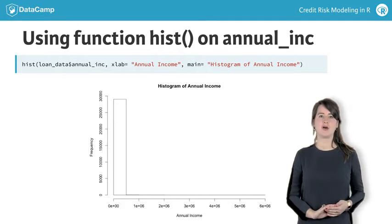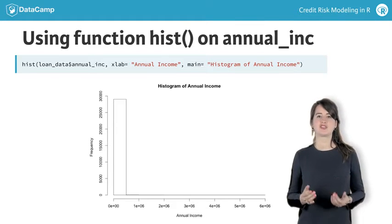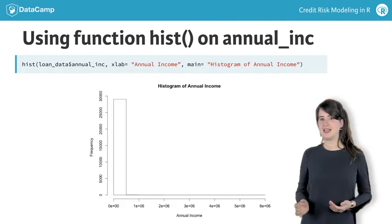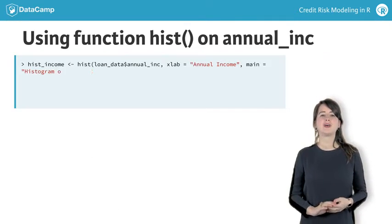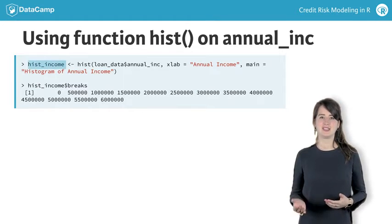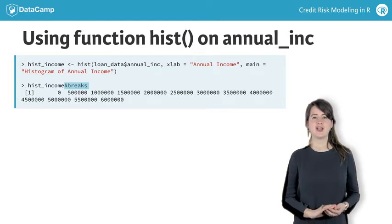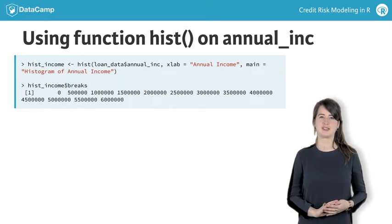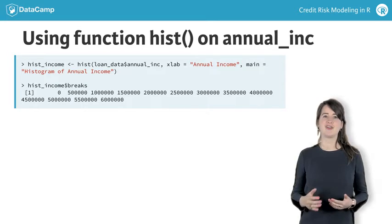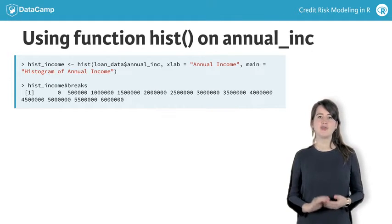Let's have a look at the histogram of annual income. We notice that we get a strange result here, with seemingly just one big bar. Storing the histogram in hist_income and using dollar sign breaks, we get information on the location of the histogram breaks. In order to get a clear idea on the data structure, you can change the number of breaks using the breaks argument.